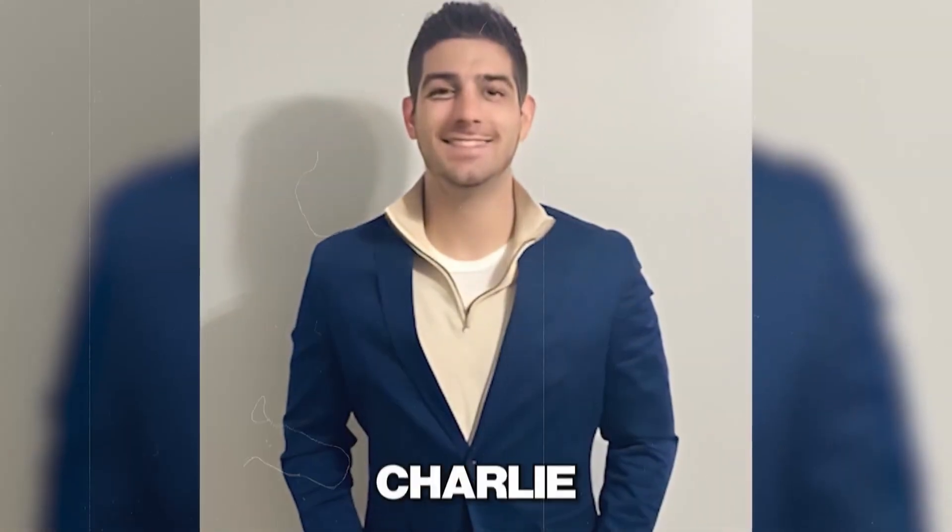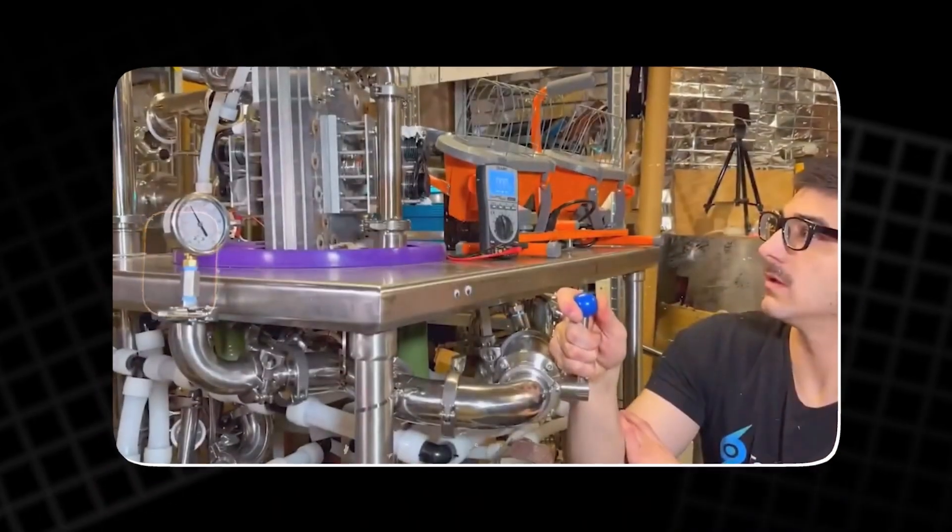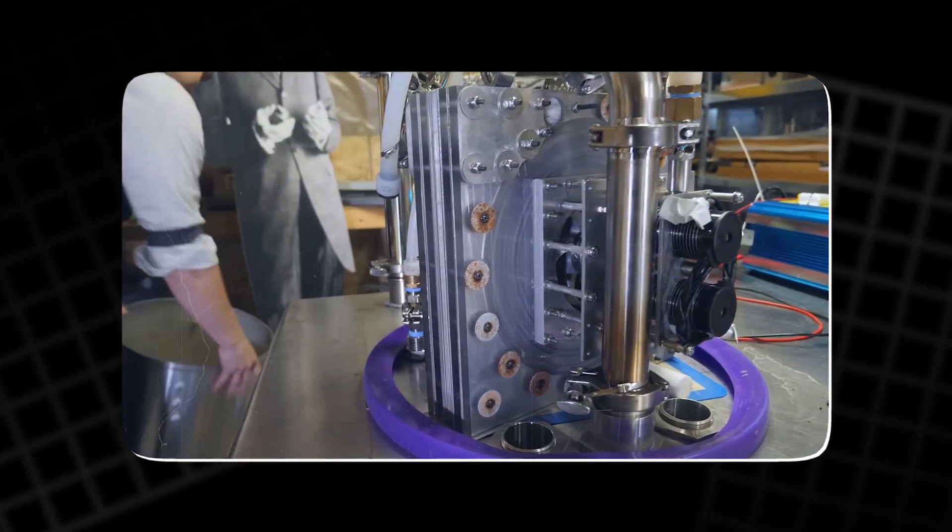Most people, except Charlie. Charlie, a physicist with a passion for building things, didn't see the Tesla turbine as a dead end. He saw potential. He believed that, under the right conditions, it could deliver impressive torque, especially at lower speeds.